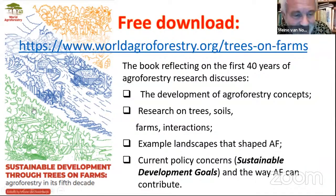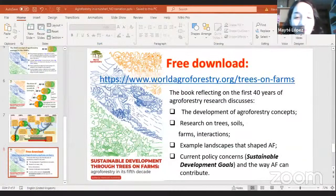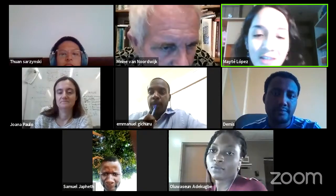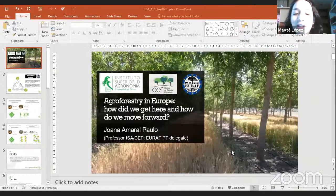Our second speaker is Joanna Paulo, professor and researcher at ISA. Her main research topics cover the understanding and modeling of the effects of climate, soil, and ecosystem management practices on tree and cork growth, grounded in data from long-term trials in forest and silvopastoral areas. She lectures on agroforestry and forest modeling, and is a founding member of the European Agroforestry Federation, currently serving as the national delegate for Portugal.